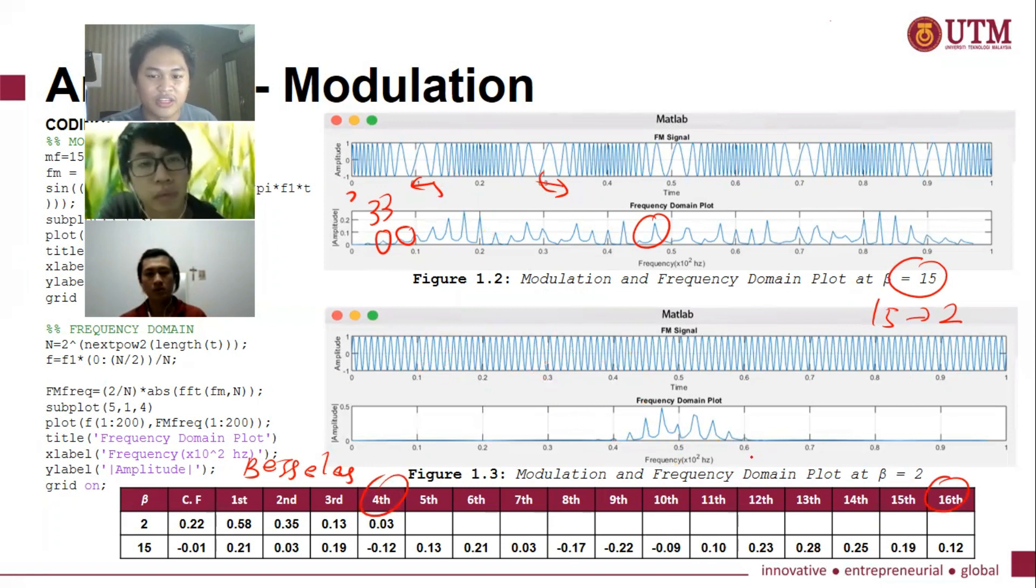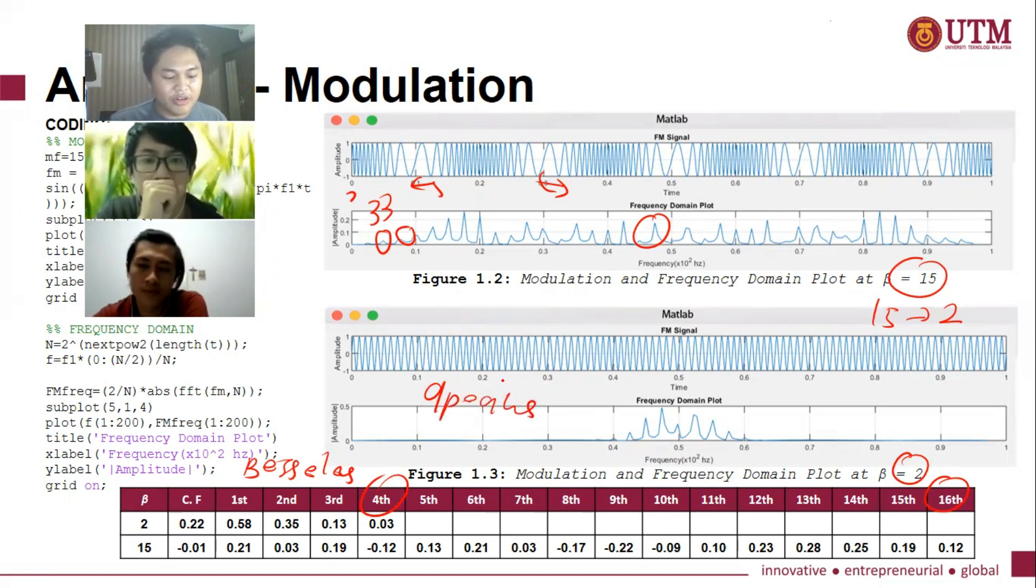Thus, the total of the number of peaks in the frequency domain plot of beta is equal to 2 is 9. However, due to the power remain the same, the magnitude of the sideband increase. You can see that the magnitude of the sideband increase, while the number of sideband of the bandwidth also decrease.